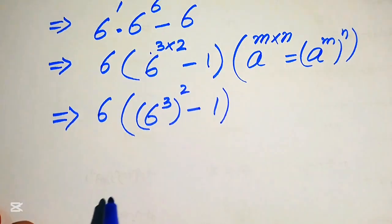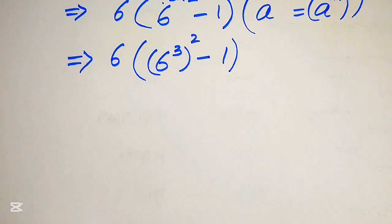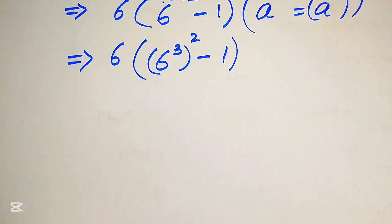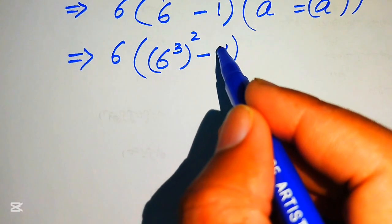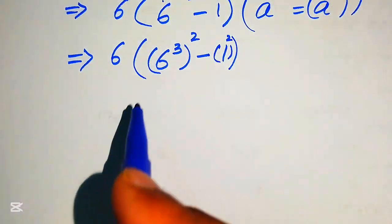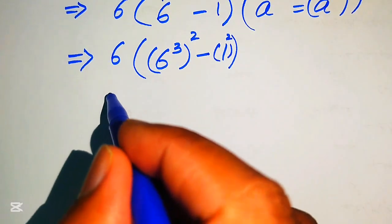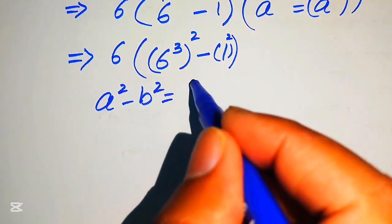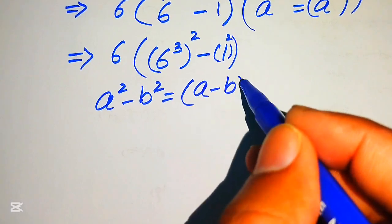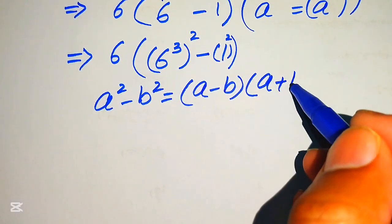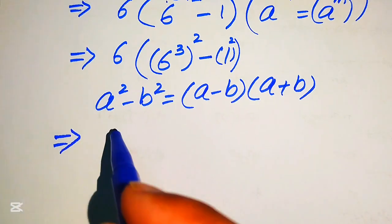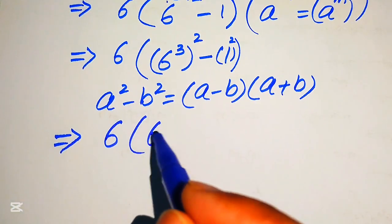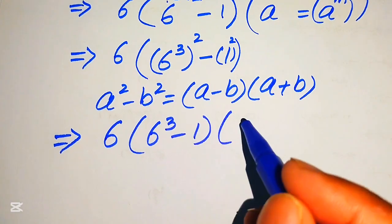Next, we write 1 as 1 squared so we can apply the difference of squares formula: a squared minus b squared equals (a minus b)(a plus b). Applying this formula, the expression becomes 6 times (6 cubed minus 1) times (6 cubed plus 1).